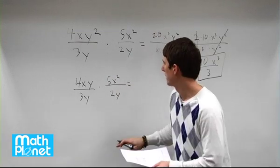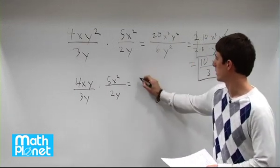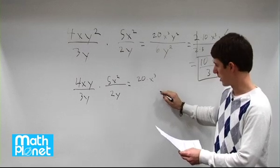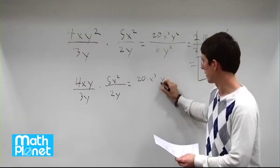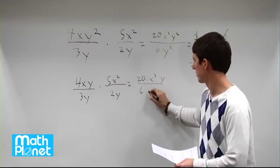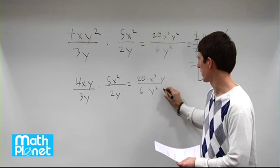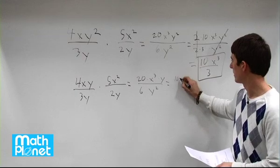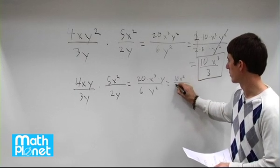And we multiply that out, well then we get something quite similar again. 20 times x cubed times y over 6y squared here. Again these are going to cancel in the same way and we're going to get 10x squared over 3.